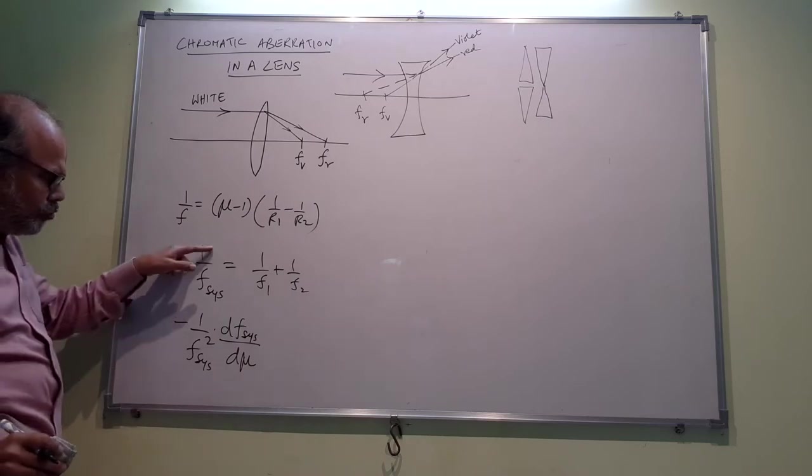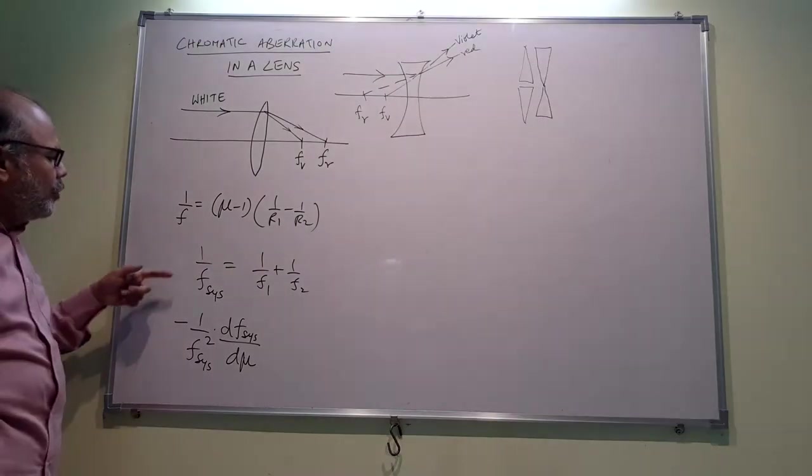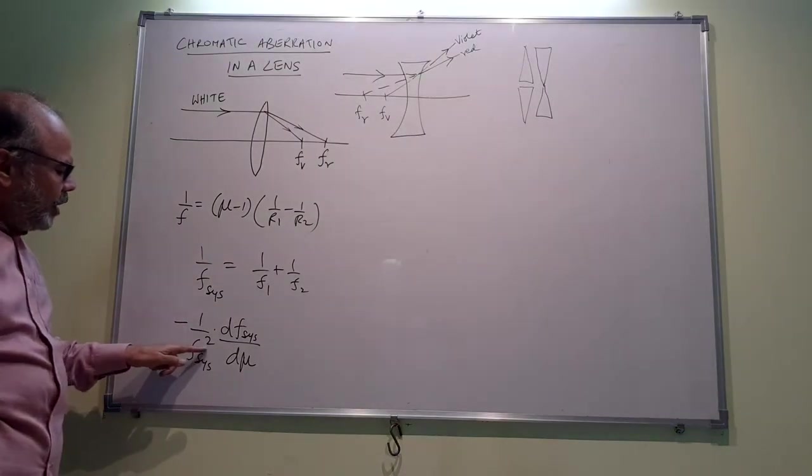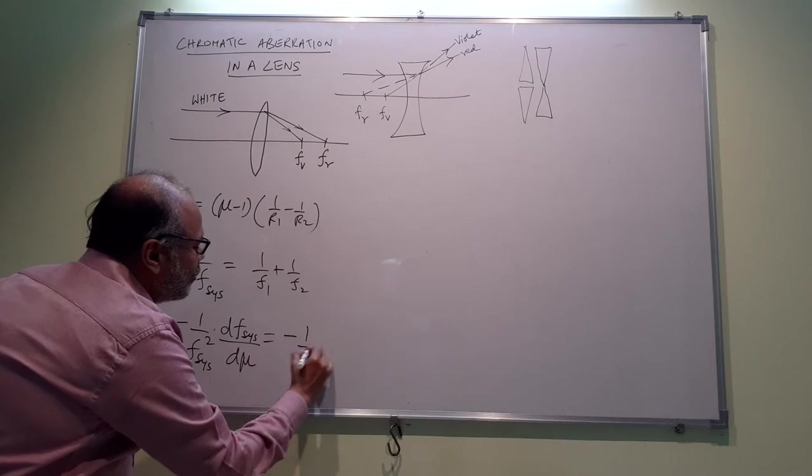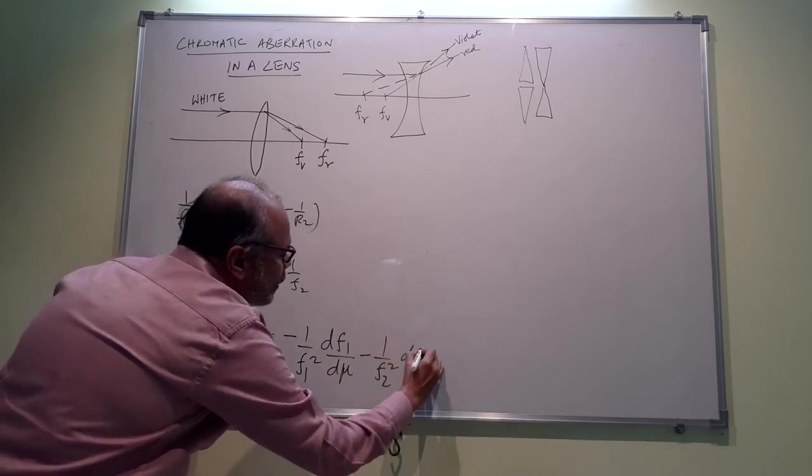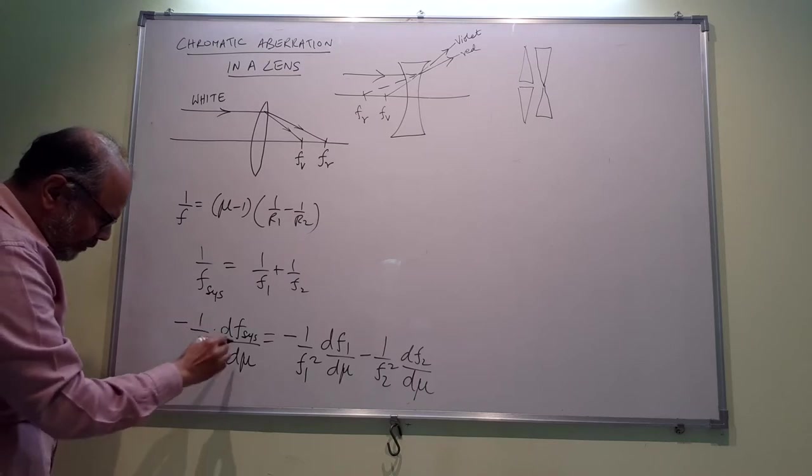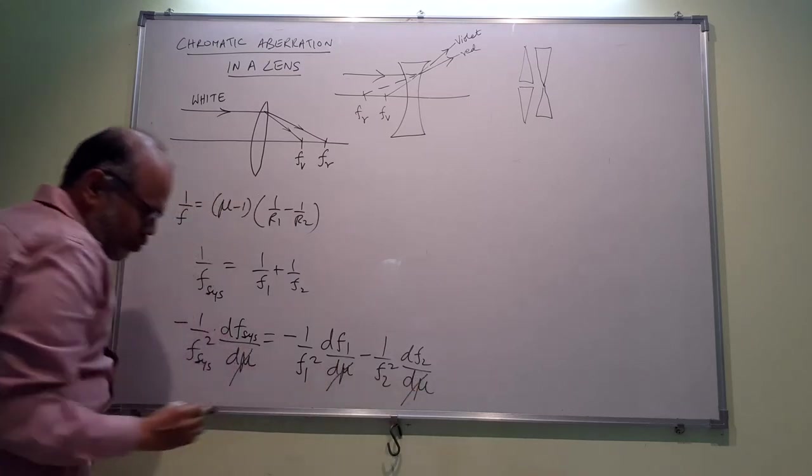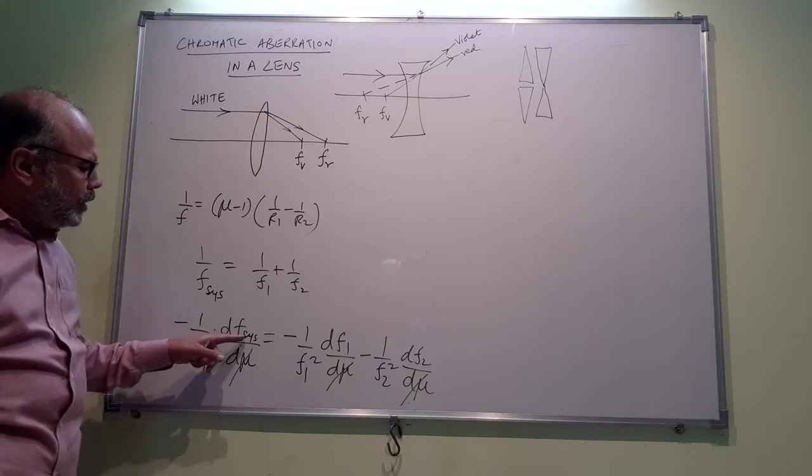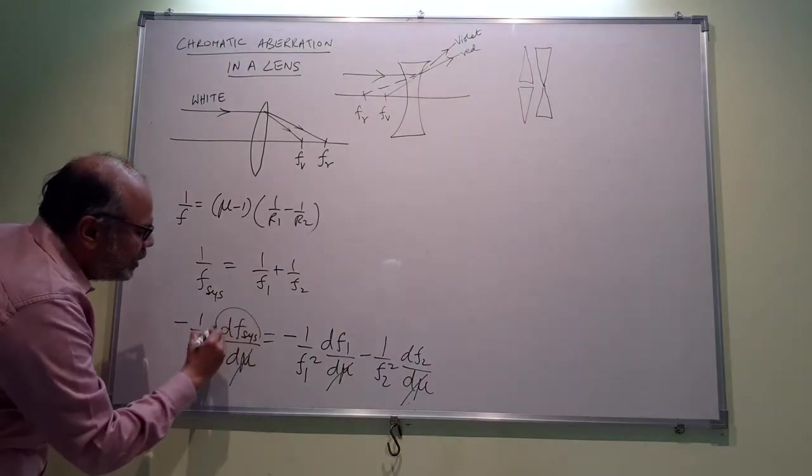How have we done that? This is f_system raised to -1, so -1 times the derivative of x raised to n is n times x raised to n-1. Similarly, for this you will have -1/f₁² df₁/dμ minus 1/f₂² df₂/dμ. Now we can ignore the derivative with respect to μ and see only the differentials. If you see only the differentials, we want that the resultant focal length of the system should be constant and independent of the refractive index. So we want essentially that df of the system should be 0.